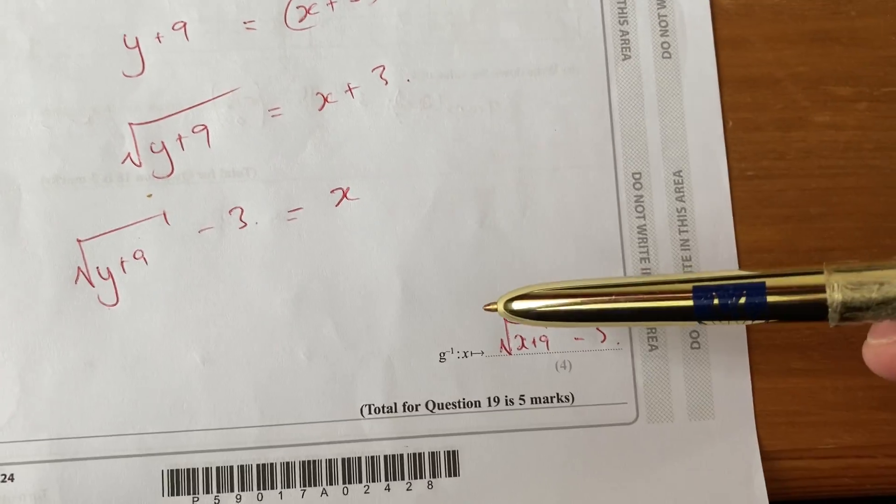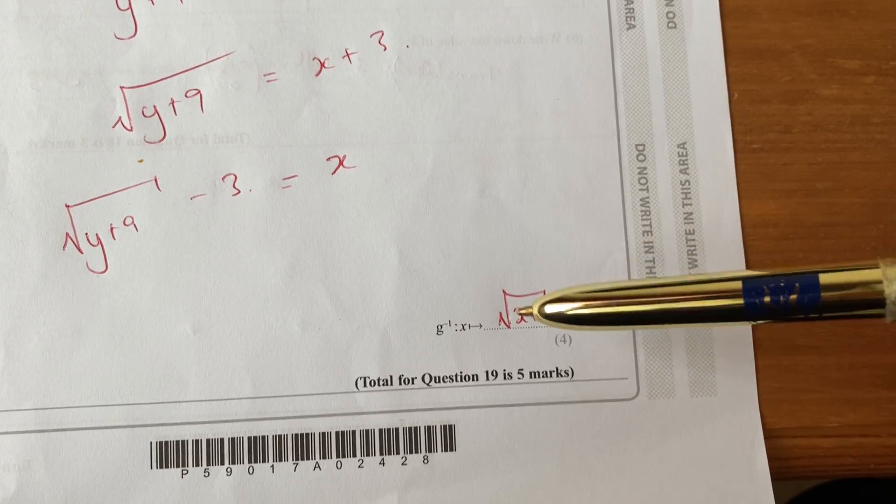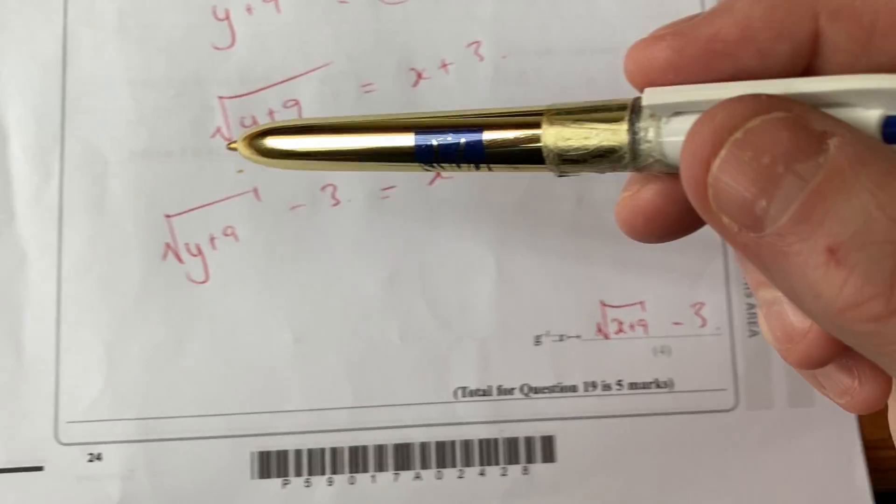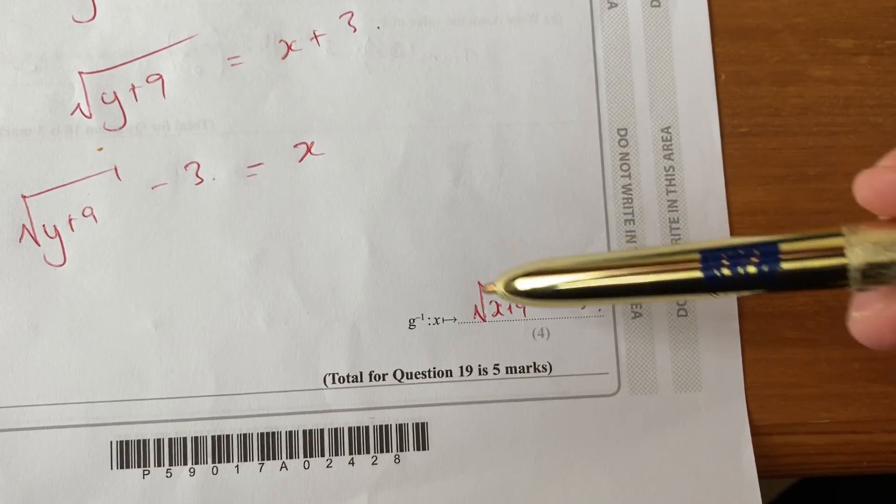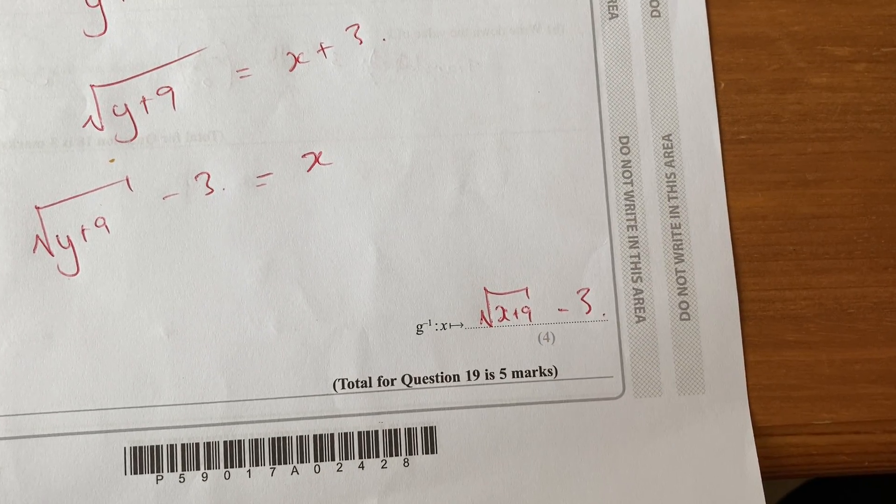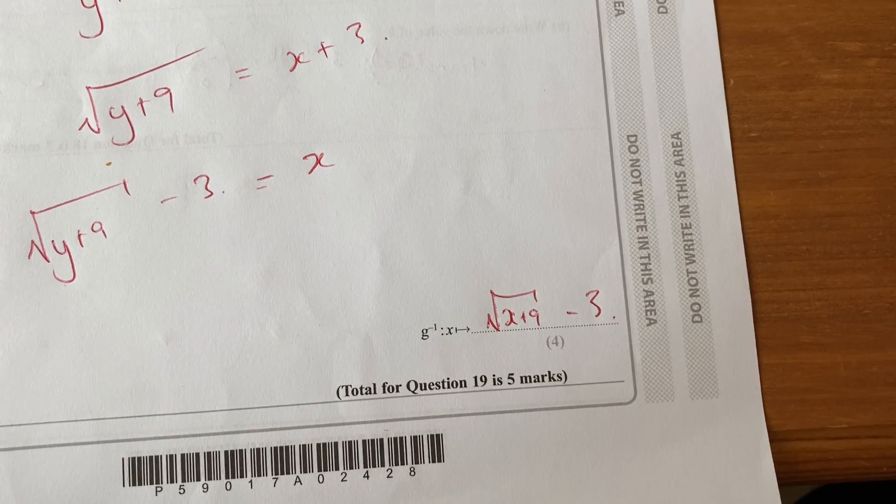But when you give the inverse function, remember that you replace the y's in your inverse with x's. So final answer: square root of x plus 9 minus 3.